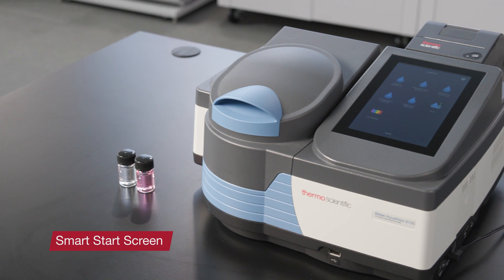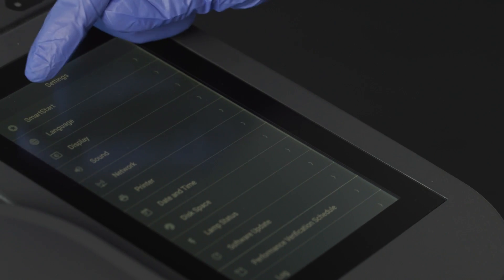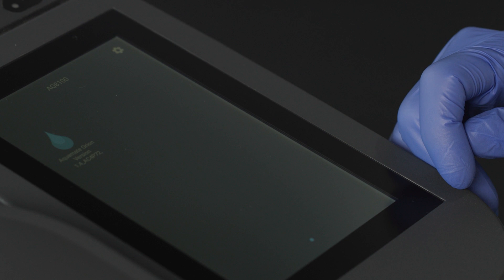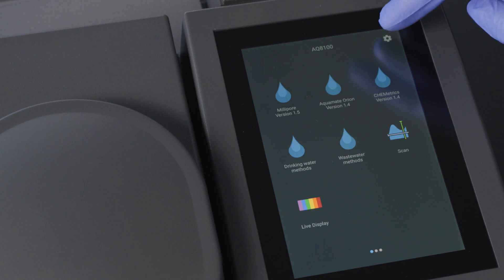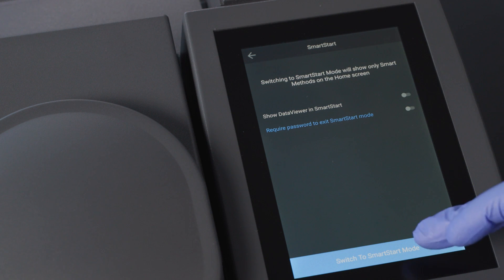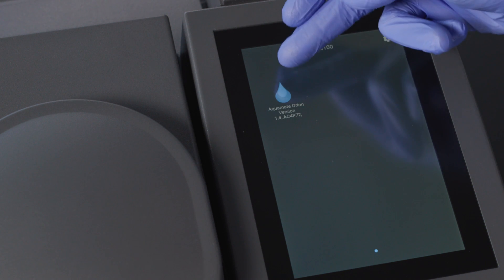There's also a Smart Start screen. This allows us to store frequently used methods in a special folder. So, for example, if I know that I'm going to do a chlorine test every day, I can store the appropriate method in this folder. To access the Smart Start feature, I simply go back to the settings menu, then select Smart Start. This could be password protected if we want to limit access to just the selected methods.